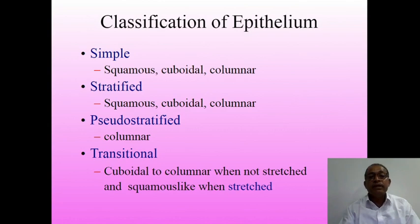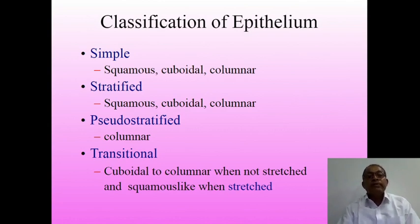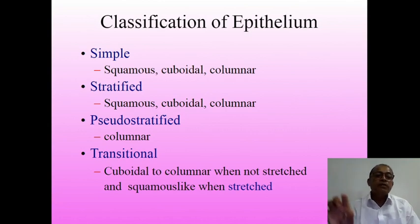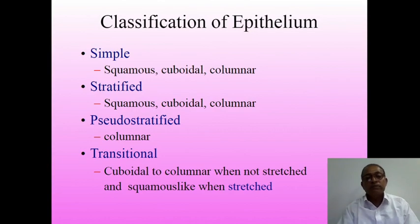Stratified epithelium — you know how many strata there are. For example: squamous stratified, cuboidal stratified, columnar stratified, and pseudostratified. Certain epithelium is transitional, known as transitional epithelium — so columnar epithelium will stretch to a thermo-like structure, showing a cube-like or dome-like structure.